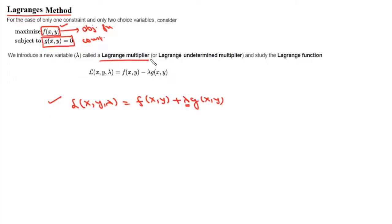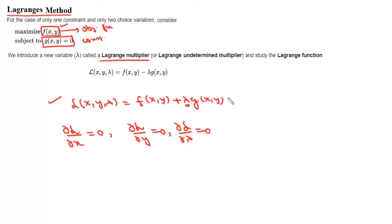We find the gradient of this Lagrangian function and set it equal to zero: del L/del x = 0, del L/del y = 0, and del L/del lambda = 0. We solve these conditions to find maxima and minima subject to the given constraint, using multivariable calculus tools like the Hessian matrix.